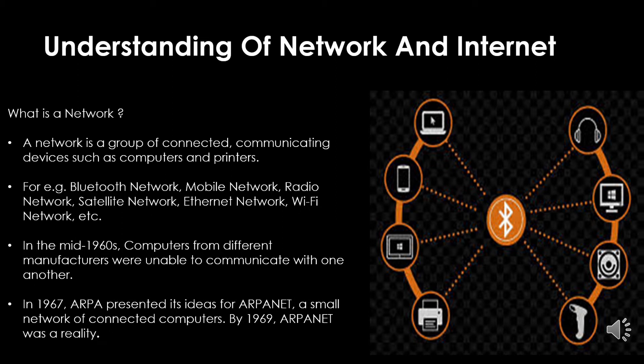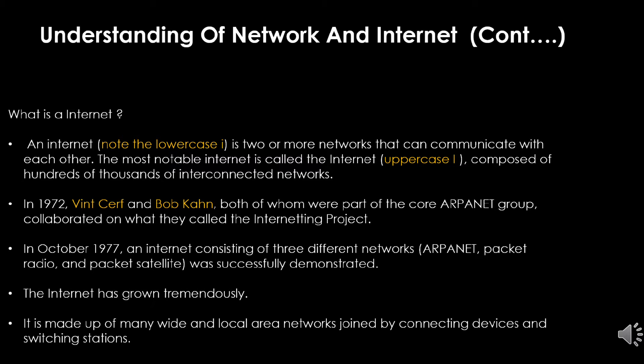Let's dive into the past. In the mid-1960s, computers were unable to communicate with one another. In 1967, ARPA, a research project agency of the US Department of Defense, presented its ideas for ARPANET. ARPANET became a reality by 1969 — it was the first computer network. By 1970, we were able to communicate through computers by creating a network. But we were still not able to communicate between two different networks, because each network had its own rules and its own language to communicate with other devices.